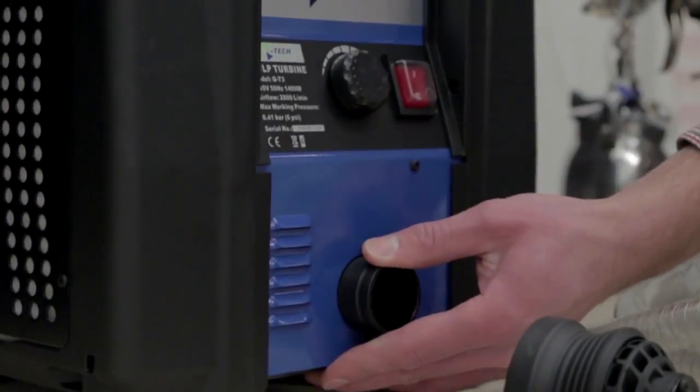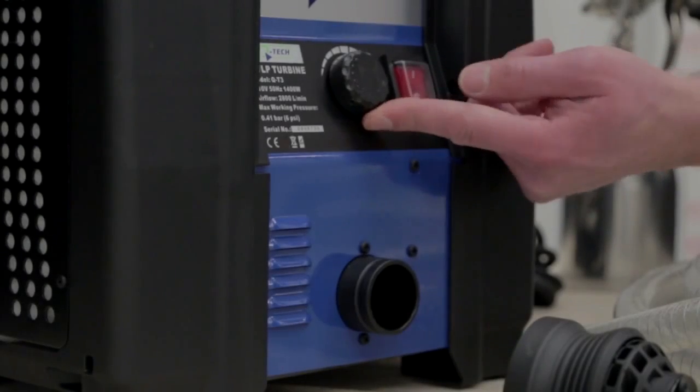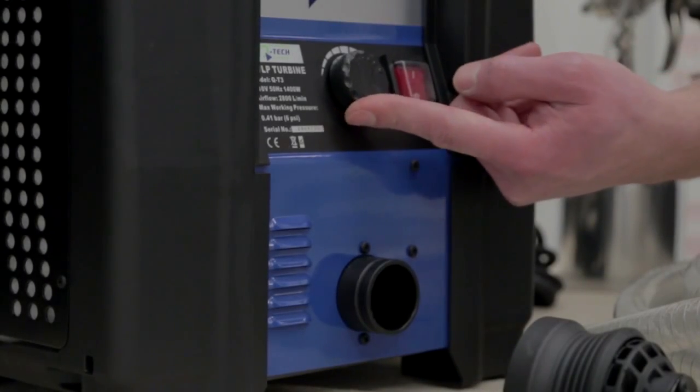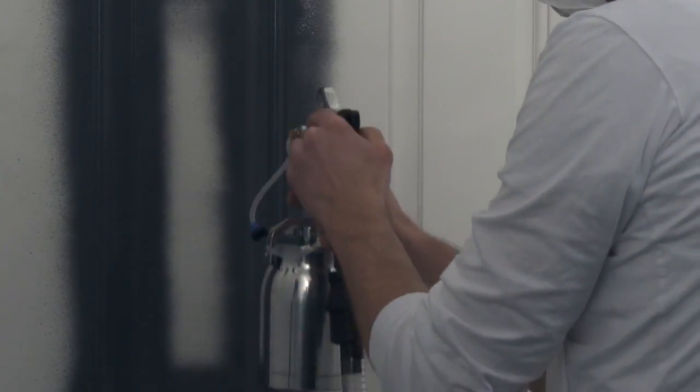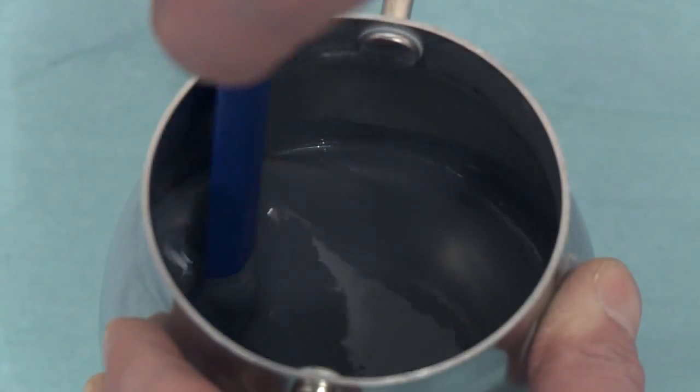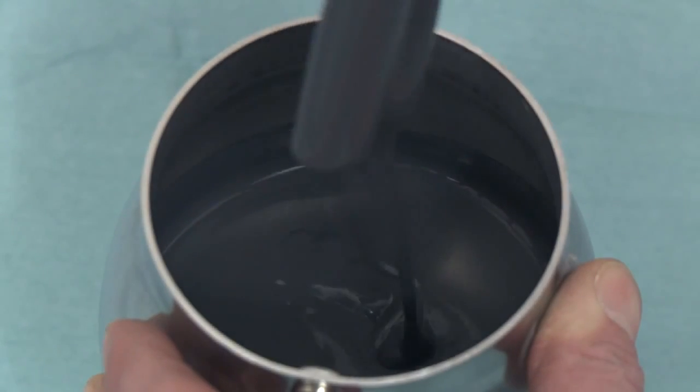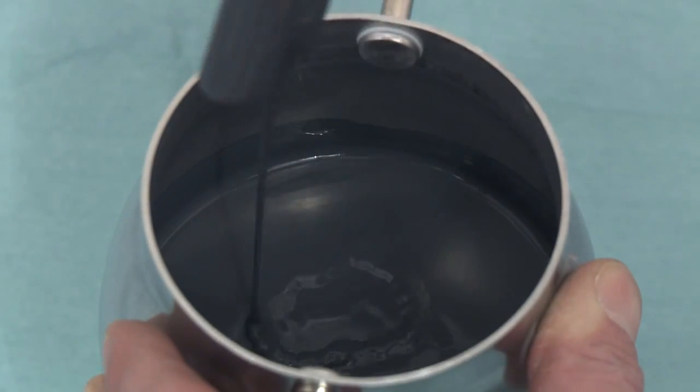Make sure the spraying area has good ventilation and keep the turbine unit on the floor at all times. If spraying flammable media, the electrical unit must be at a safe distance from the spraying area. Please note that you should always read the paint manufacturer's data sheet supplied with the coating prior to it being sprayed.